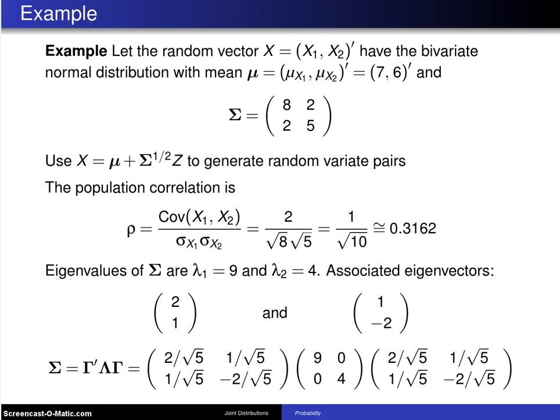Here's an example of implementing the result on the previous page for a bivariate normal with specific parameters. So let the random vector X, which is a column vector X1, X2, have the bivariate normal distribution with mean vector mu X1, mu X2 of 7 and 6.